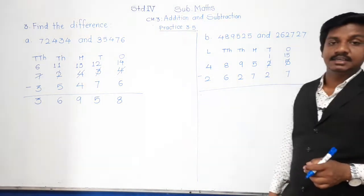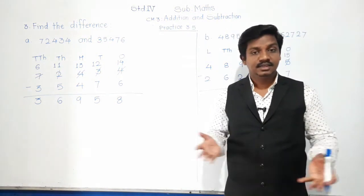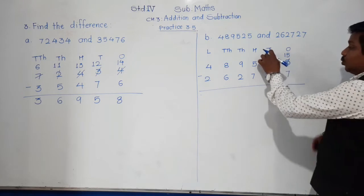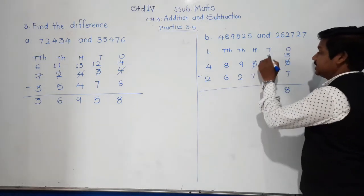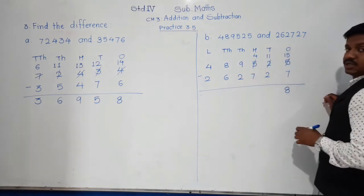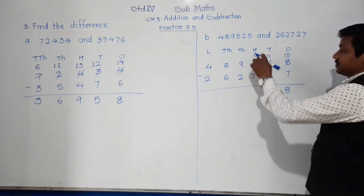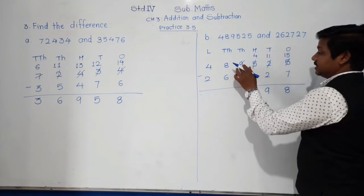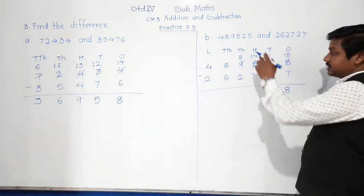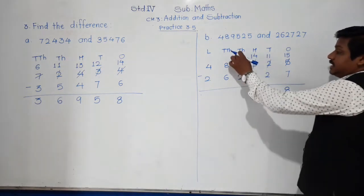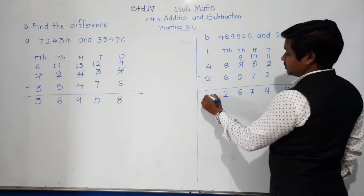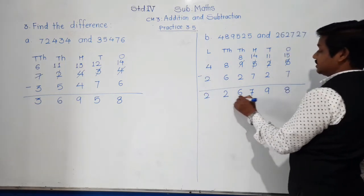15 minus 7 is 8. At tens place: 1 minus 2 — not possible. From 5, one is borrowed; 5 becomes 4, and tens become 11. 11 minus 2 is 9. At hundreds place: 4 minus 7 — not possible. From 9, one is borrowed; 9 becomes 8, and hundreds become 14. 14 minus 7 is 7. 8 minus 2 is 6. 8 minus 6 is 2. And 4 minus 2 is 2. So the answer is 2,26,798.